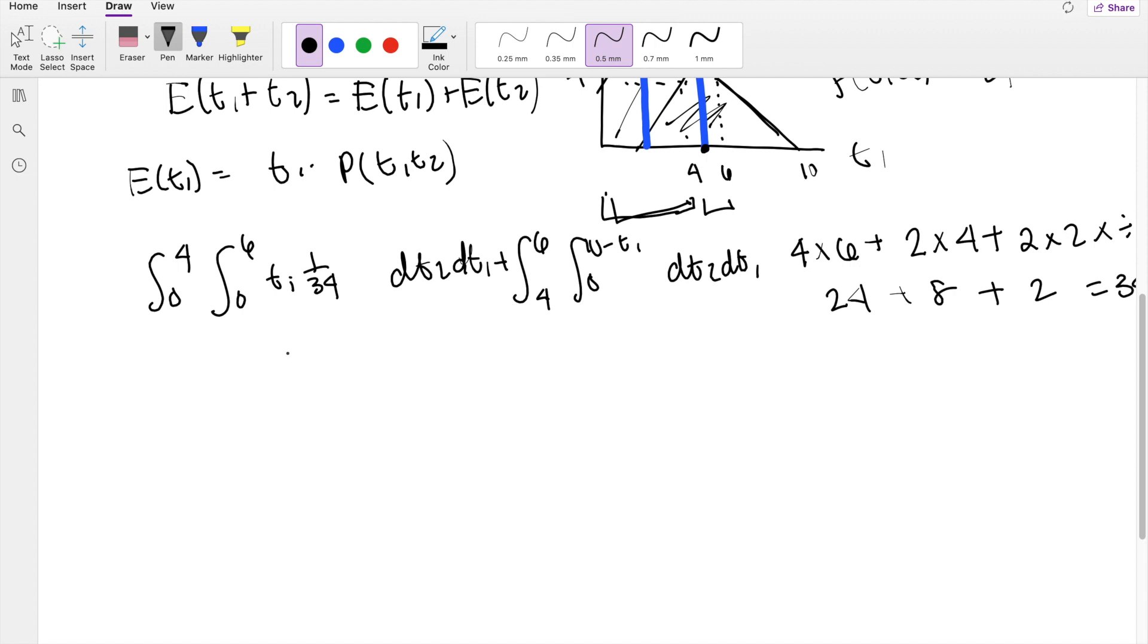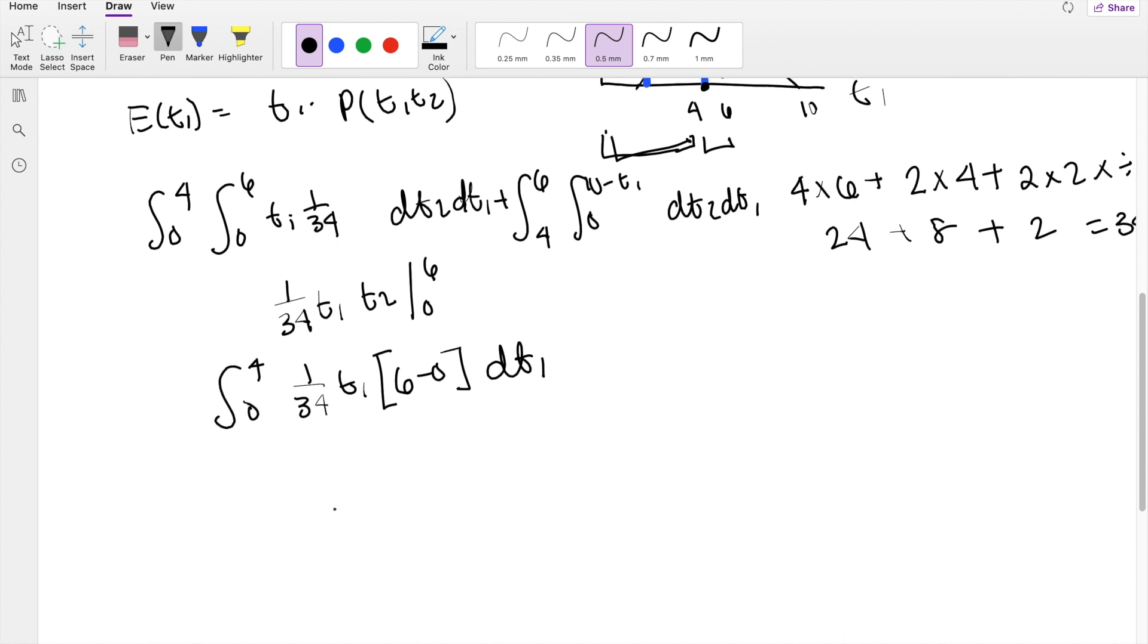So integrating, because 1 over 34, t1 is just a constant, I can do it at dt2. Integrating t2 from 0 to 6, so you get 1 over 34, t1. Plugging in the upper limit, you get 6, the lower limit just gives you 0. Integrating this in respect to dt1 going from 0 to 4. So then this just becomes 6 over 34, which is 3 over 17.